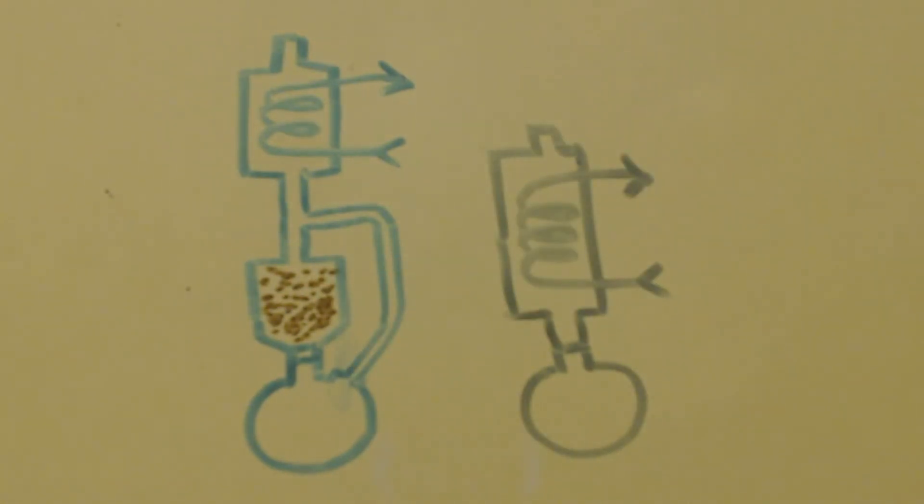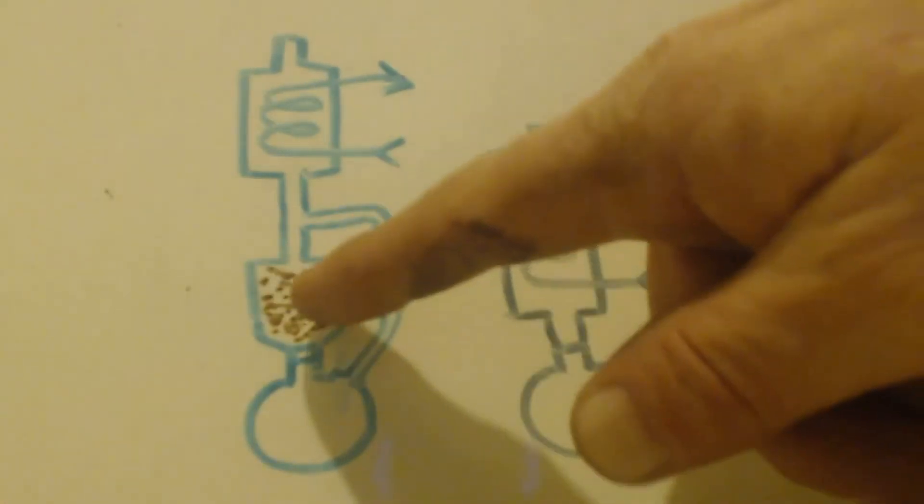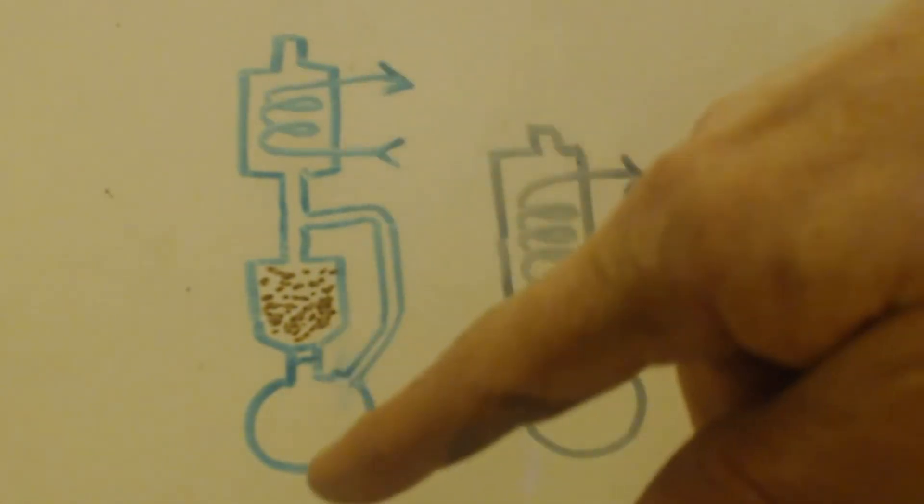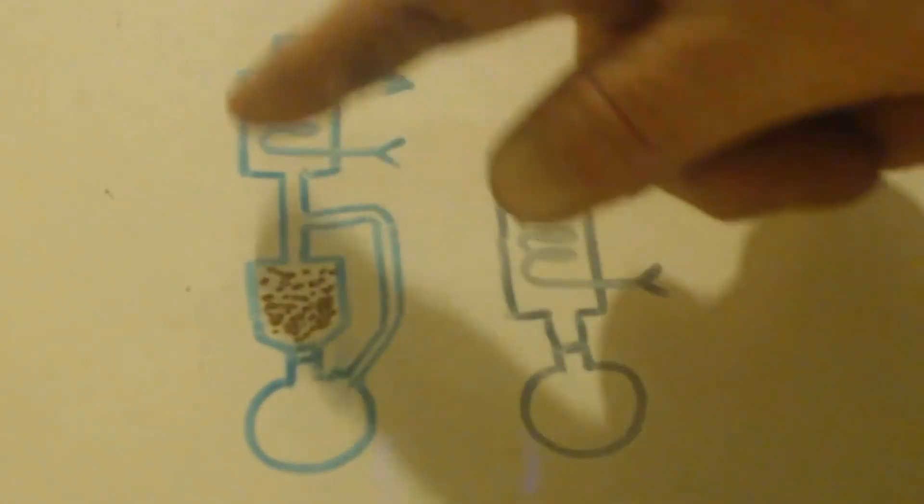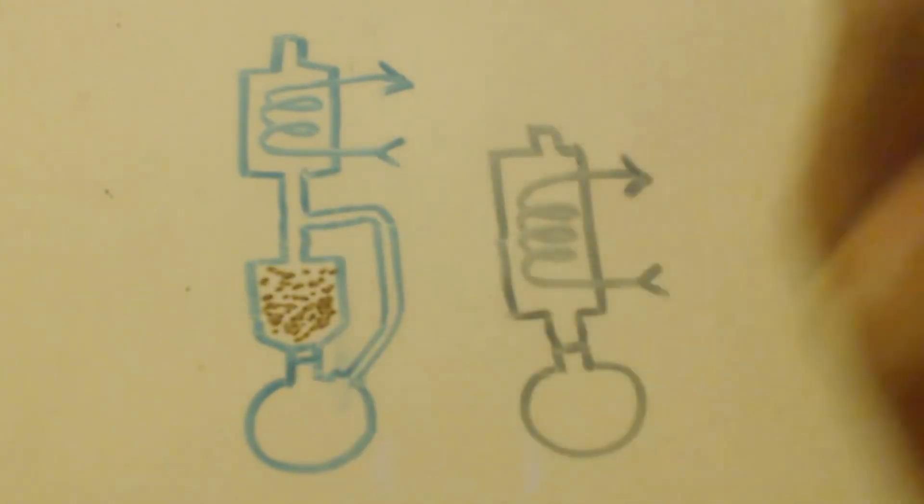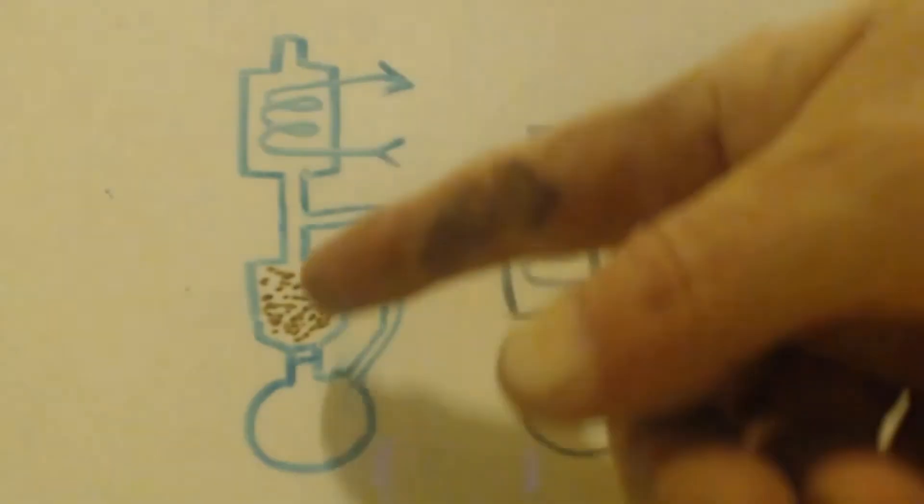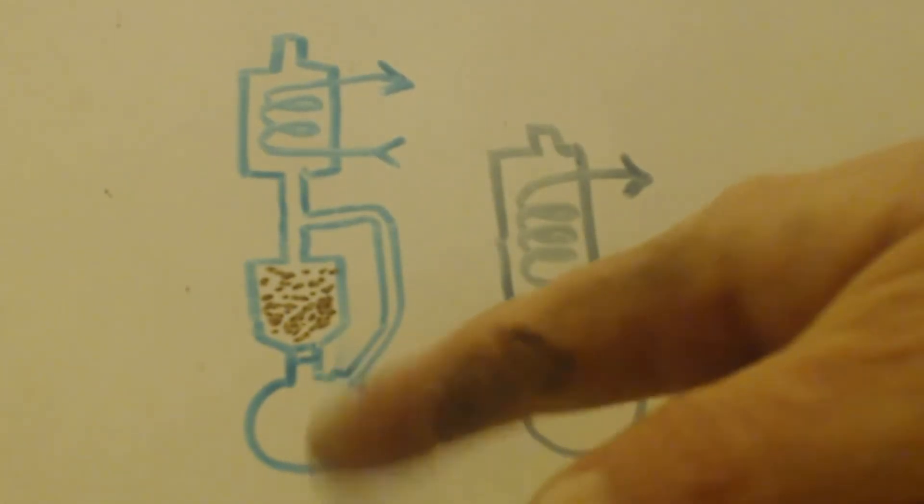This is basically the way a Soxhlet reflux apparatus is. Your pot boils, it goes up this little tube, and then it goes up into a condenser. When it condenses down, it can't escape because it's too cold. So it condenses, and it drips down into this little vat where I have these brown dots. Those brown dots would represent the magnesium sulfate. Then you have some cotton or whatever down here, or you have a filter there, so that none of this drops down into your pot.